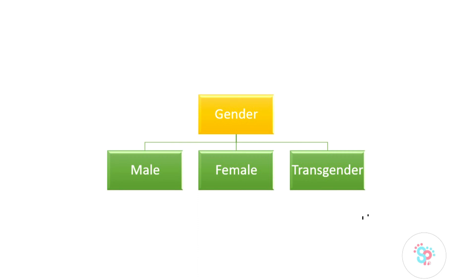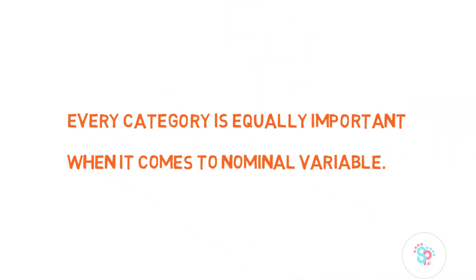Similarly, if we take blood type, we have various categories such as O positive, AB positive, AB negative, B positive, B negative, and so on. There is no need to put these in any fixed order — we can change them freely. There is no way to order these categories from highest to lowest or lowest to highest. Every category is equally important when it comes to nominal variables.